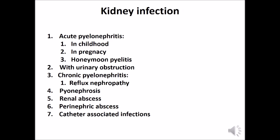Kidney infection can be broadly described under the following headings: 1. Acute pyelonephritis, especially in childhood and pregnancy. 2. Honeymoon pyelitis. 3. Kidney infection with urinary obstruction. 4. Chronic pyelonephritis, in a routine case or with reflux nephropathy. 5. Pyonephritis, renal abscess and carbuncle, perinephric abscess, and catheter-associated infections.